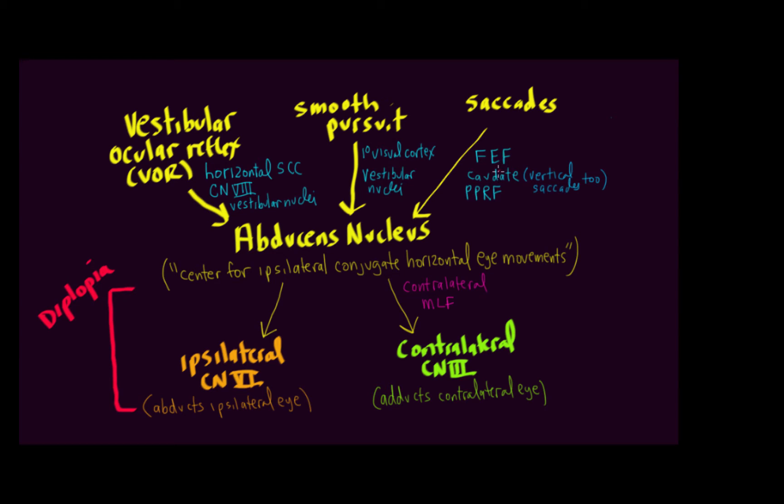but rather problems in the eye movement control system affecting both eyes. If you have lesions of six or lesions of three or lesions of the ascending medial longitudinal fasciculus, you're going to have double vision.